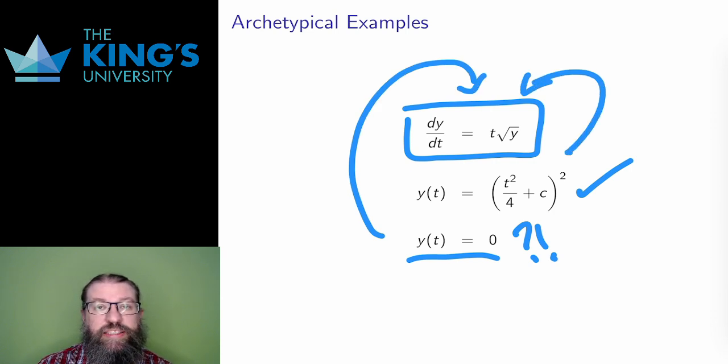This example shows that strange solutions can crop up. There is a family of solutions with parameter c, but also a solution that isn't in the family. No value of c will give the solution y equals 0 in the family. And such extra solutions are often called singular solutions.